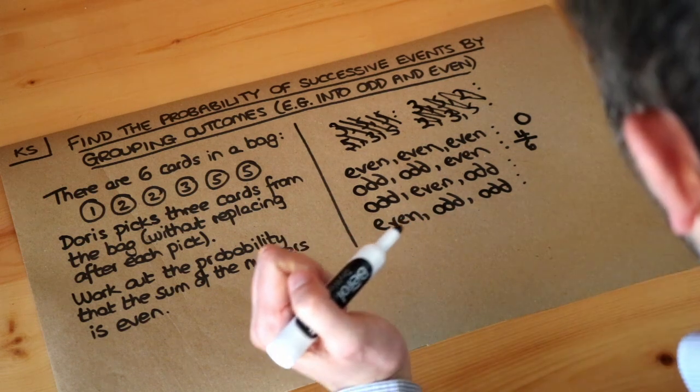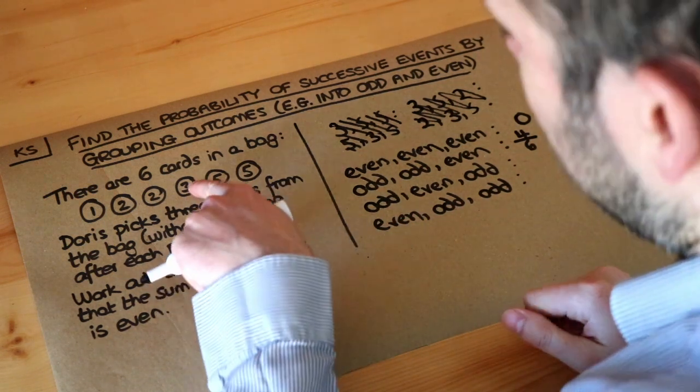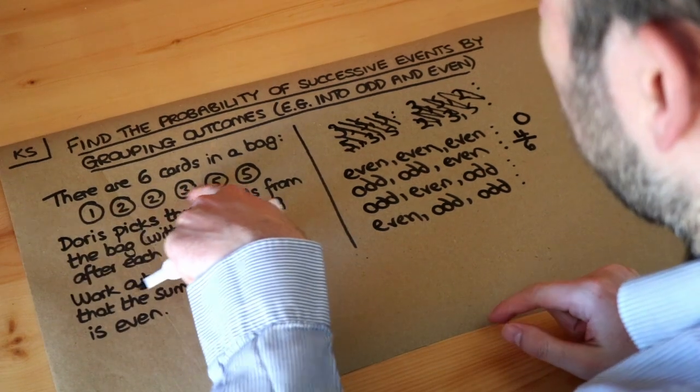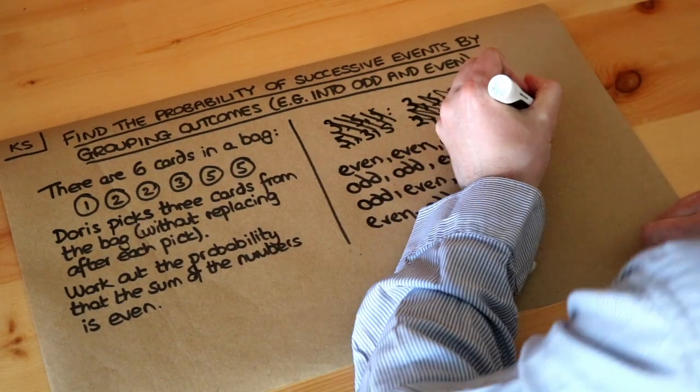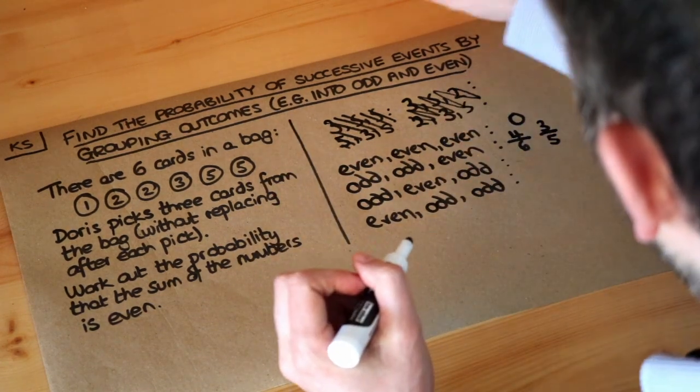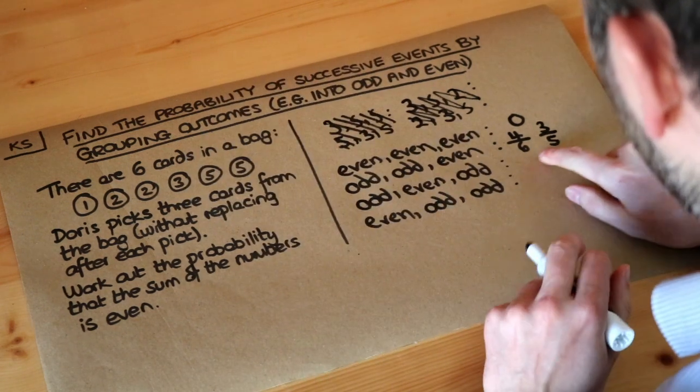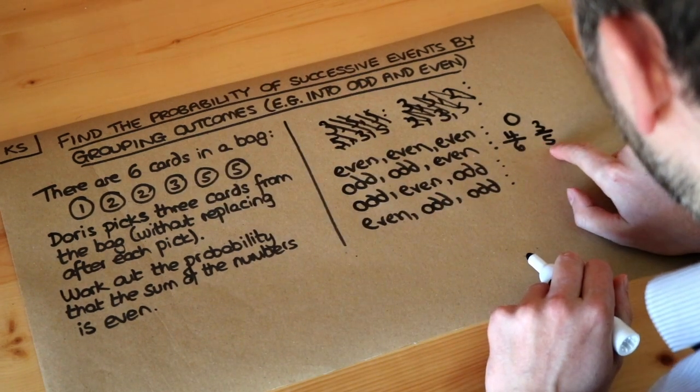Well, we've already taken out one odd card, so we've now only got three odd ones left. Say, for example, we pick the one, we've only got the three, the five, and the five left, so it's three odd cards left out of only five cards left. Remember, if we're choosing something and then not putting it back, there's one less card to pick from, so the denominator goes down by one.